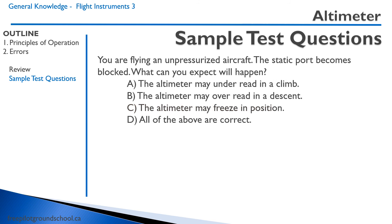Here's our last question — finally, one that's not a trick question. You're flying an unpressurized aircraft. The static port becomes blocked. What can you expect will happen? A. The altimeter may under-read in a climb. B. The altimeter may over-read in a descent. C. The altimeter may freeze in position. D. All of the above are correct. The correct answer is D. Remember, it's going to under-read in a climb and over-read in a descent, but if it's completely blocked, it will freeze in position.